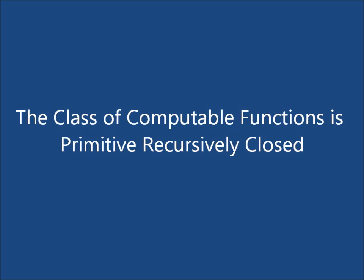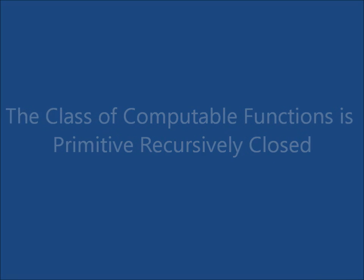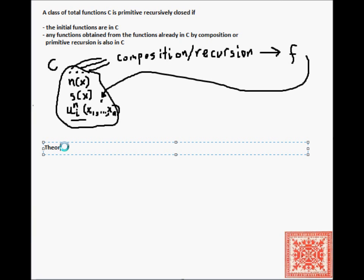Let's prove the theorem: the class of computable functions is primitive recursively closed. This is Theorem 3.1 from Chapter 3 of Computability, Complexity and Languages by Davis, Weyuker, and Segal, second edition. The class of computable functions is PRC.